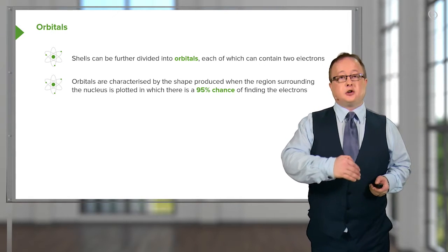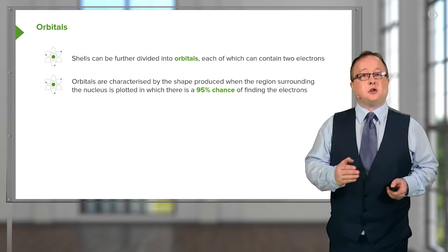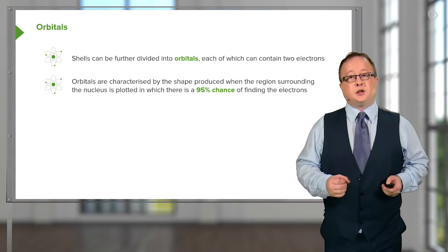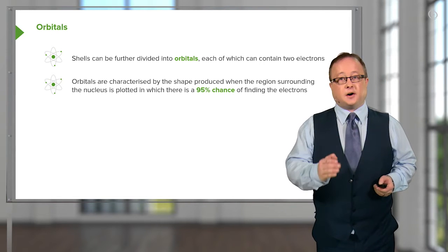Orbitals are characterised by a shape that's produced when the region surrounding the nucleus is plotted, in which there is a 95% chance of finding the electrons.